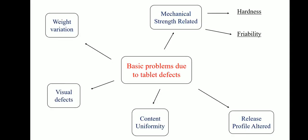Basic problems arise due to tablet defects. There are five problems. First is weight variation. When the tablets do not have uniform weight, it is known as weight variation. This type of variation occurs when granules are not uniform in size, and poor flow of granules from hopper to die also causes weight variation.